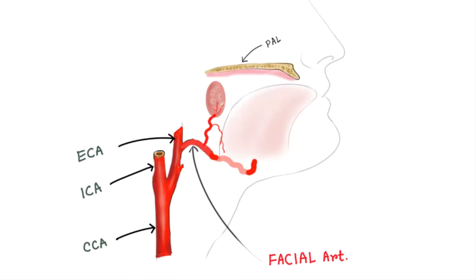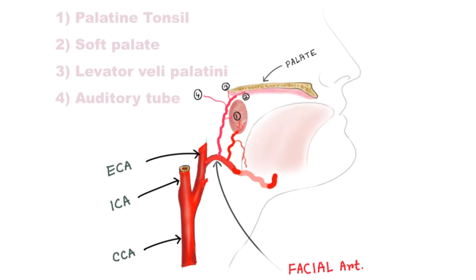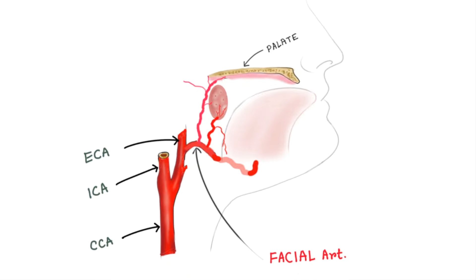The ascending palatine artery runs along the superior pharyngeal constrictor muscle up to the soft palate area. It mainly supplies four important structures: the palatine tonsil, soft palate, levator veli palatini muscle, and the auditory tube.